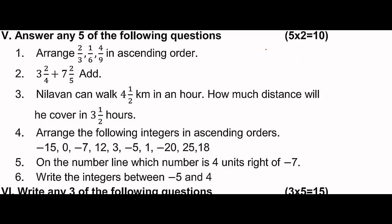Next problem: 3 and 2/4 plus 7 and 2/5. We convert these mixed fractions to improper fractions. 4 times 3 is 12, plus 2 is 14, so the first fraction is 14/4. 7 times 5 is 35, plus 2 is 37, so the second fraction is 37/5.